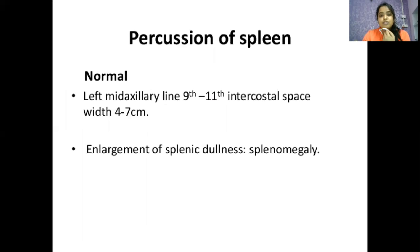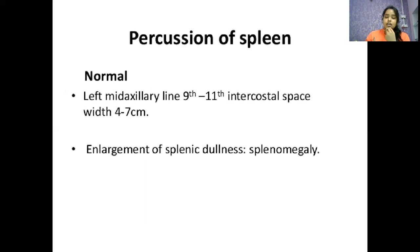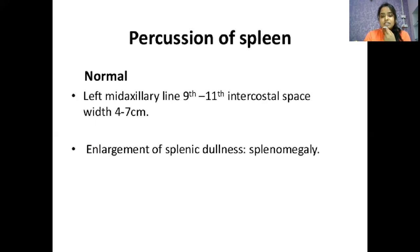Percussion of spleen: the normal left mid-axillary line spans from the sixth rib to the ninth and eleventh intercostal space, with a width of four to seven centimeters. Enlargement of splenic dullness indicates splenomegaly.